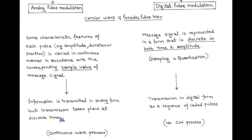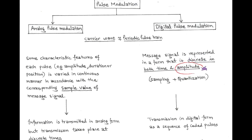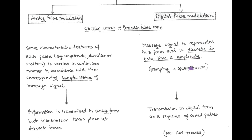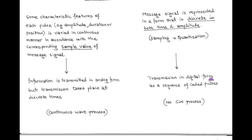And in order to convert continuous time into discrete time, we use the sampling process. Accordingly, analog pulse modulation is called a continuous wave process. But in digital pulse modulation, the message signal is represented in discrete form in both time and amplitude. Here, we use sampling as well as quantization process. Using the sampling process, we get discrete time, and using the quantization process, we get discrete amplitude. So after sampling followed by quantization, the information is transmitted in digital form — that is, a sequence of coded pulses.